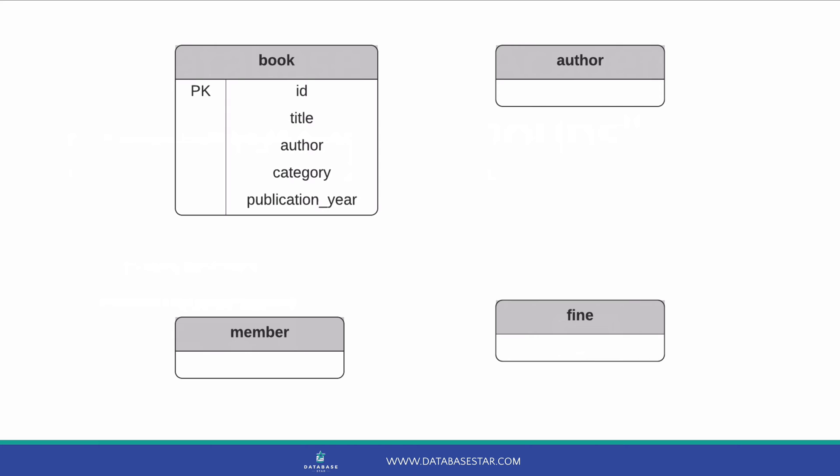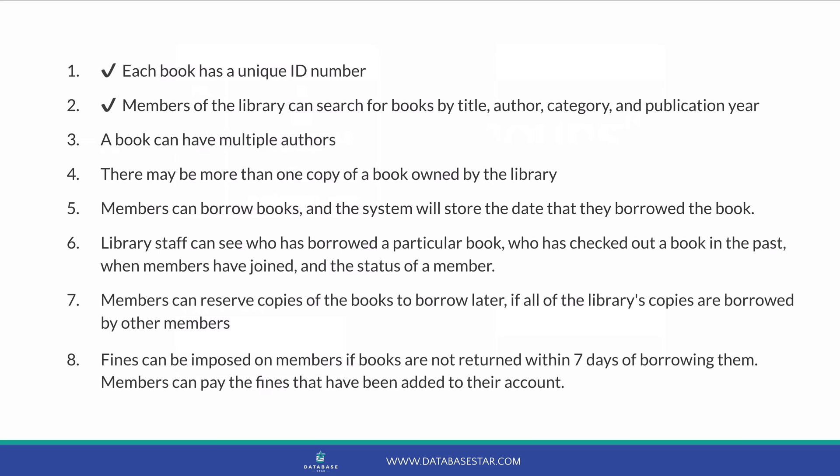Let's improve our database by adding some attributes. We'll start with the book table. We can see in the requirements that a book has a unique ID. We can also see that books can be searched by a few fields: title, author, category and publication year. So let's add them to the book table. Here's our updated ERD — our book table has been enhanced to have a few more attributes. We've added a primary key indicator to the unique ID, which will help when relating books to other attributes. We've met requirements 1 and 2 here with the book attributes.